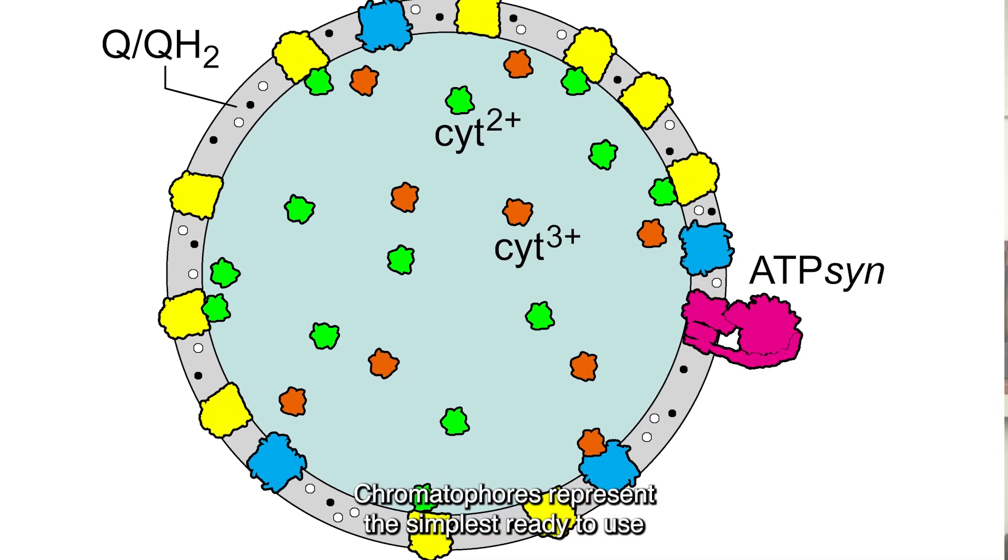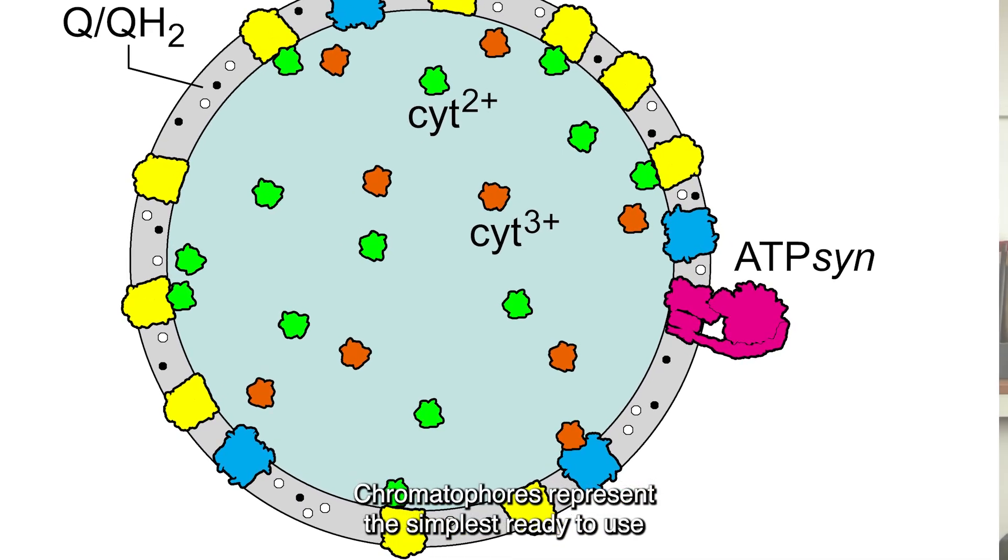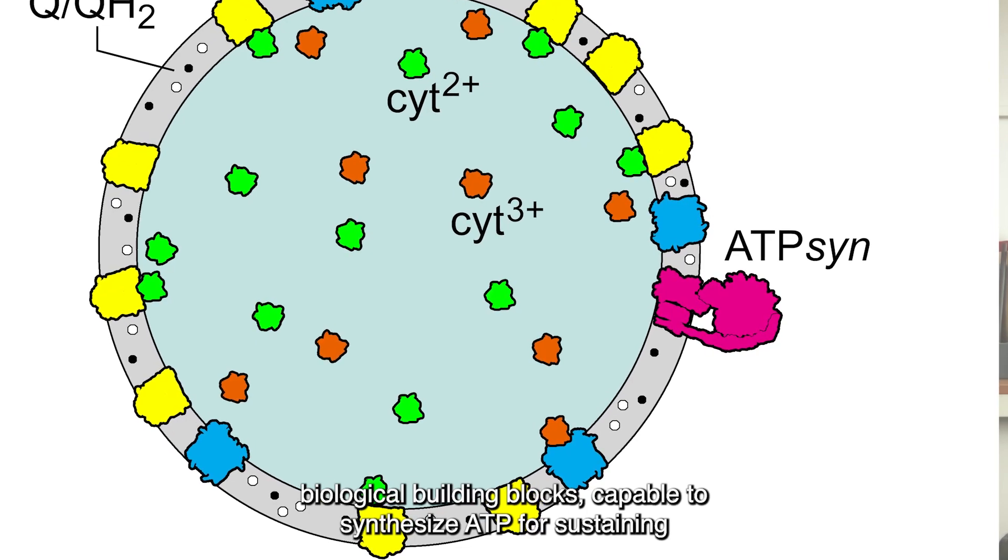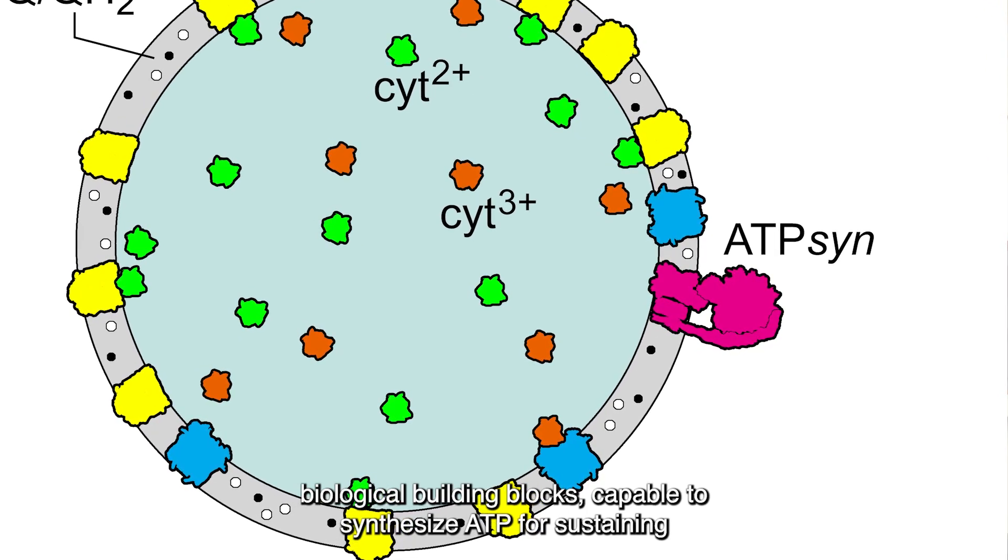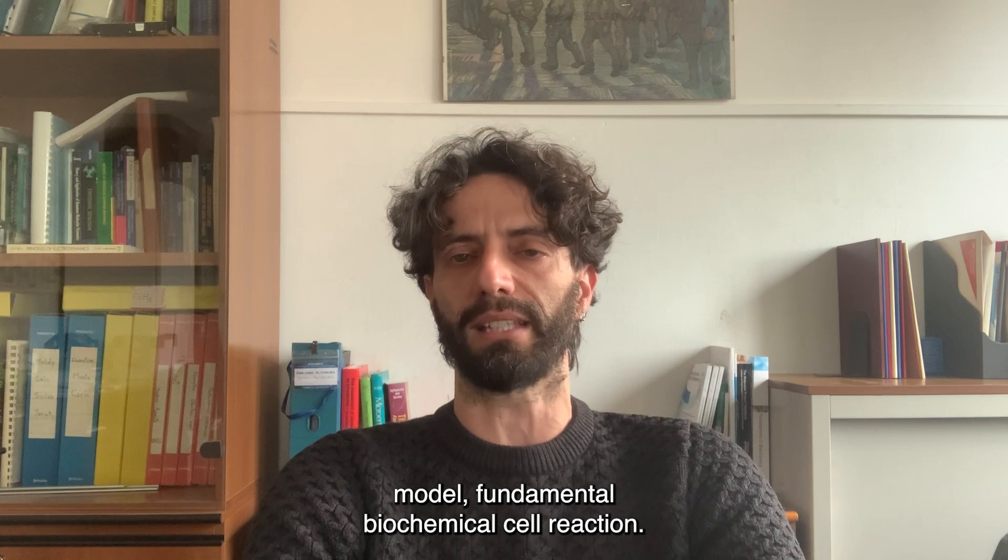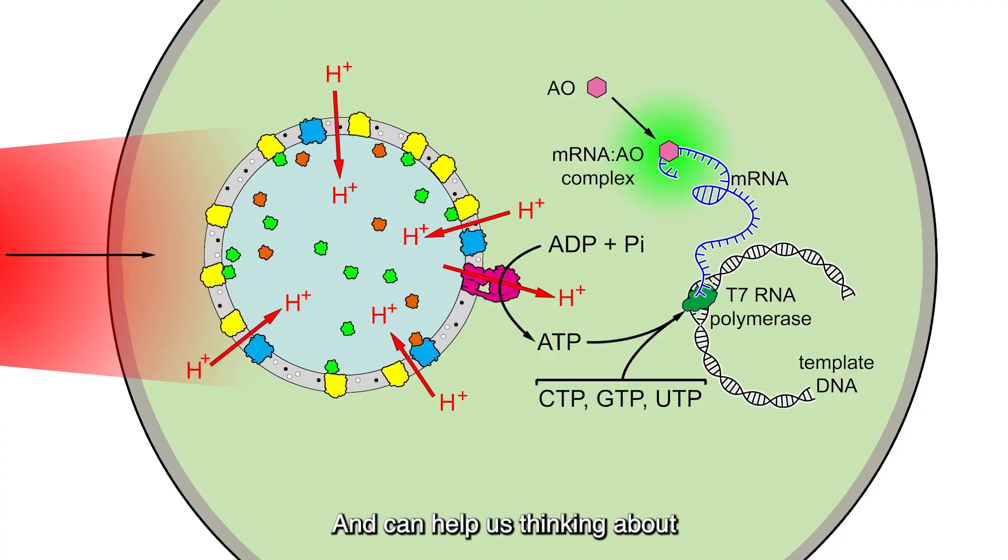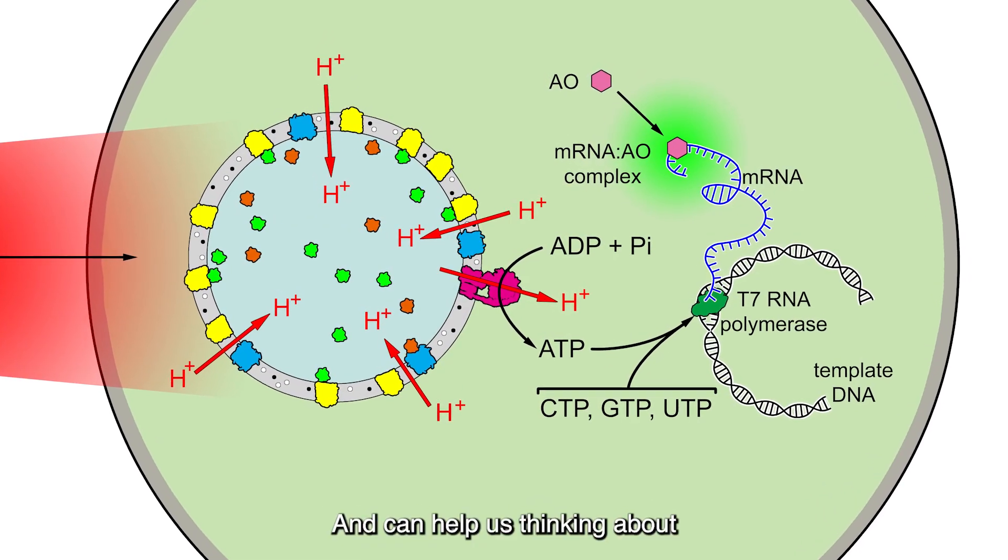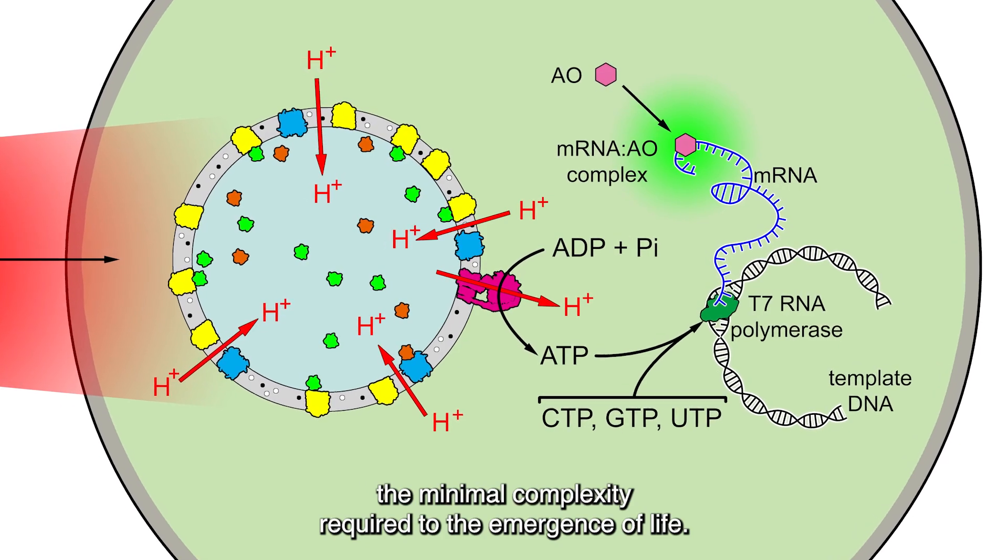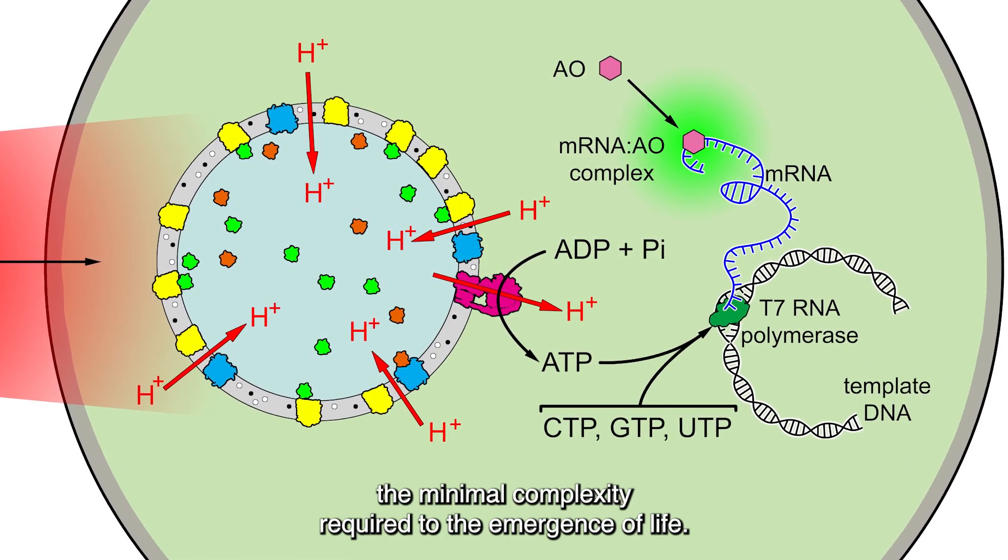Chromatophores represent the simplest ready-to-use biological building blocks capable of synthesizing ATP for sustaining fundamental biochemical cell reactions, and can help us think about the minimal complexity required for the emergence of life.